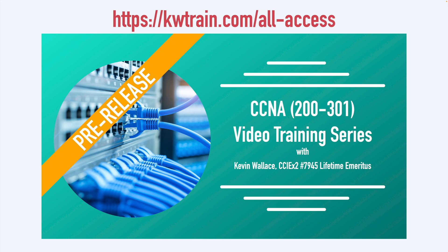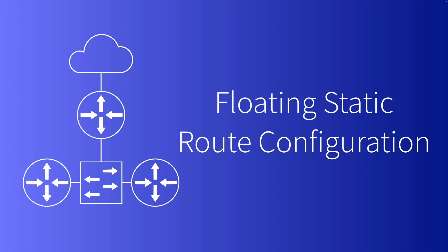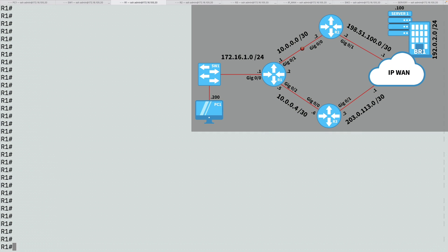Again, that's kwtrain.com/all-access. Now let's get into this week's video where we're going to take a look at floating static routes. We want to take a look at the configuration of a floating static route — floating implies that the route is not always active, it's standing by in case a primary routing source were to fail. In this topology, I'm running OSPF on routers R1, R2, and the IP-WAN router.